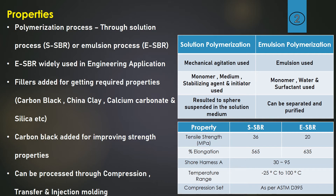Fillers are added to obtain required properties, and carbon black is normally added in SBR for improving strength properties. This polymer can be further processed through compression molding, transfer molding, or injection molding.